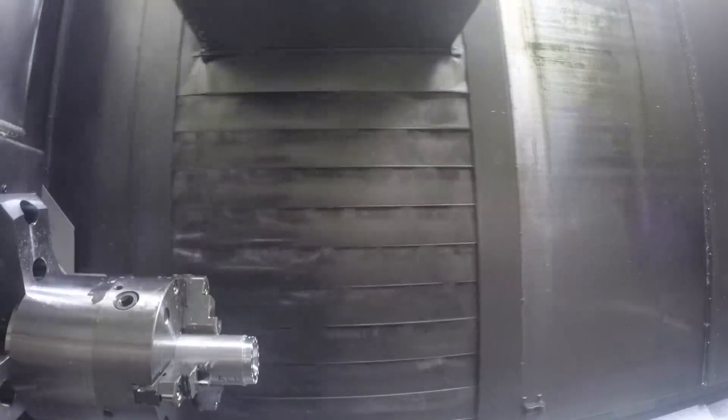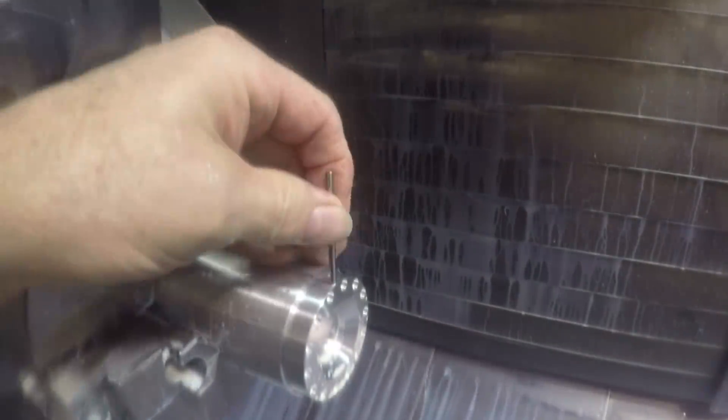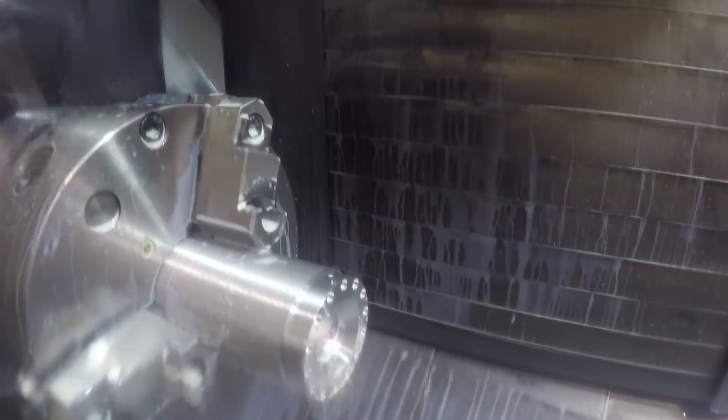Then come back and put the hole for the little barbed fitting. This is spotting for the drill for the barbed fitting that the tubing hooks onto. I needed this to be a relatively close fit because I wanted to press the barbed fittings in there. These barbed fittings hook on with that clear plastic line like you use on aquariums.